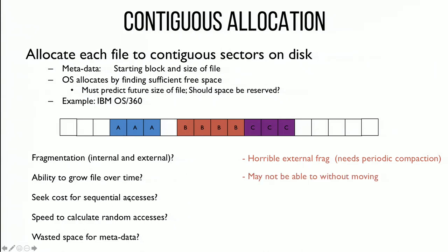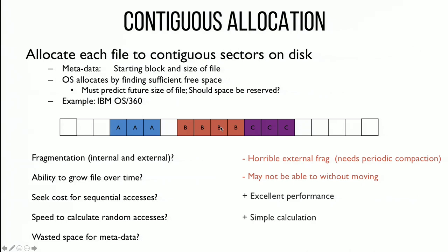However, once you find where the file is, sequential performance is great because it exactly matches the user's file with what happens on disk. Random access is quick too — it's just simple arithmetic to take the starting block and add the offset. And wasted space for metadata is trivial — we just needed to track starting block and size. So systems did this in the past but nobody does it anymore.